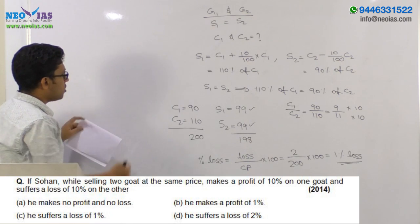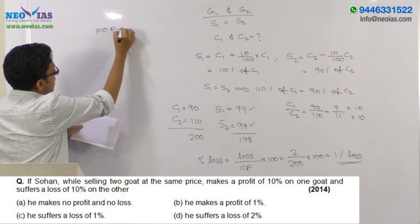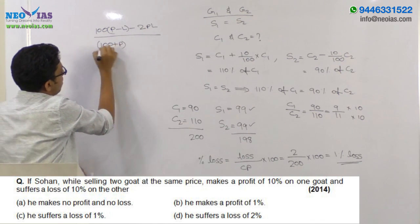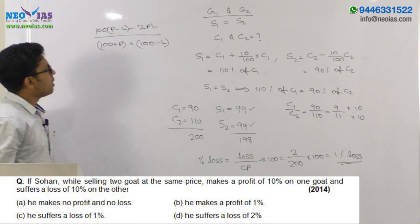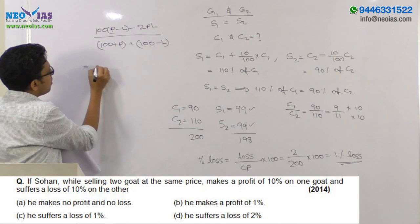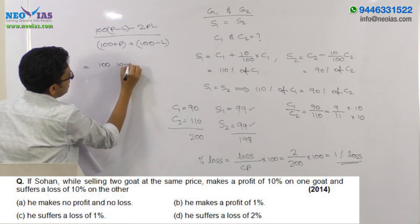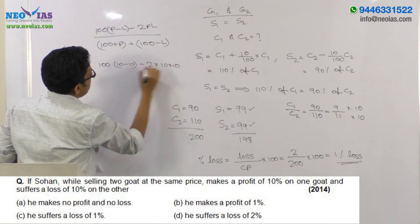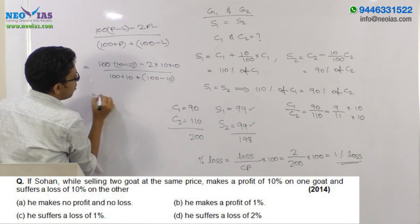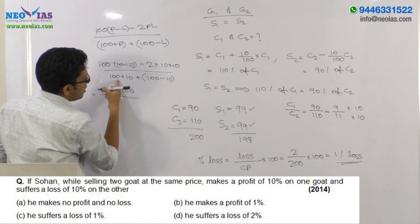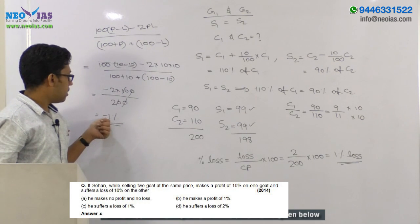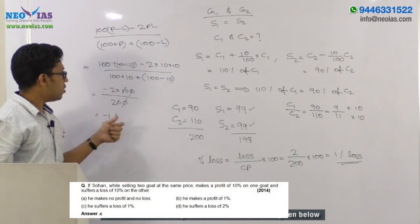There is another direct formula to solve this problem: (100(P minus L) minus 2PL) divided by (100 plus P plus 100 minus L). Here P is profit percentage and L is loss percentage. Substituting: 100 into (10 minus 10) minus 2 into 10 into 10, divided by (110 plus 90) equals negative 200 divided by 200, equal to minus 1%. The minus 1% indicates a 1% loss in the whole transaction.